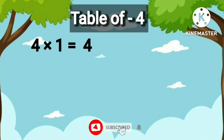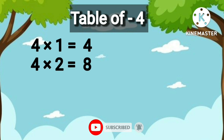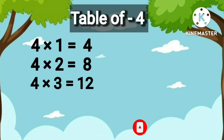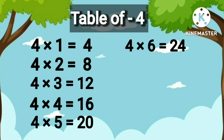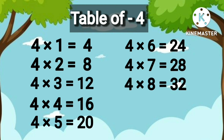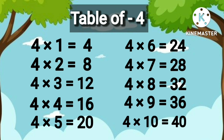4 1's are 4, 4 2's are 8, 4 3's are 12, 4 4's are 16, 4 5's are 20, 4 6's are 24, 4 7's are 28, 4 8's are 32, 4 9's are 36, 4 10's are 40.